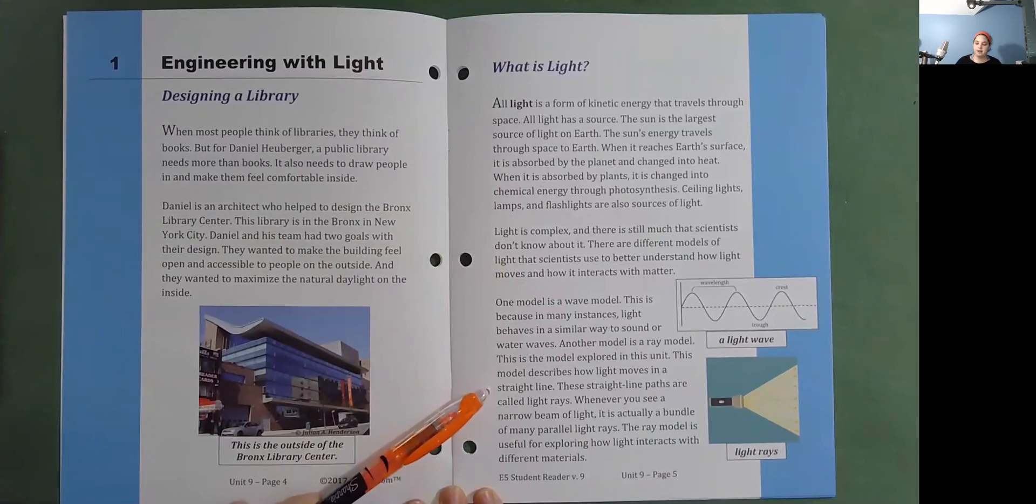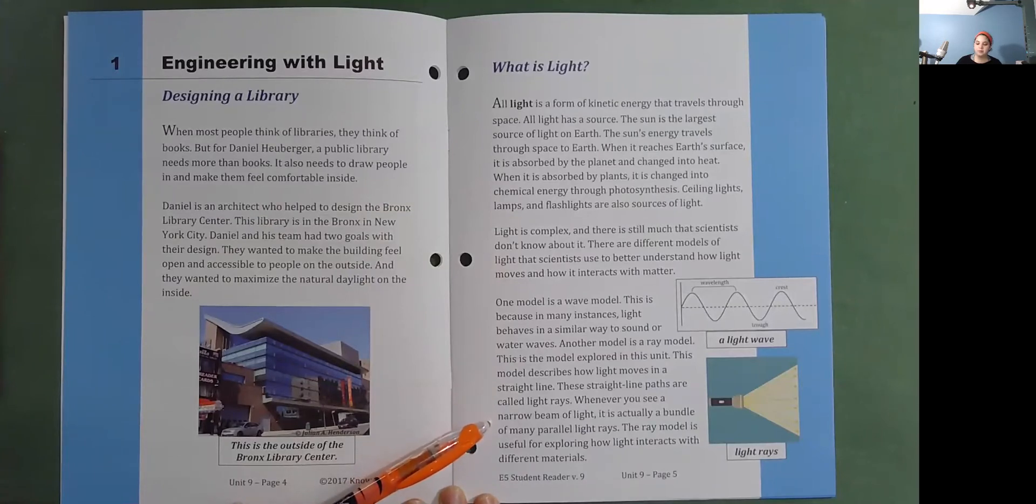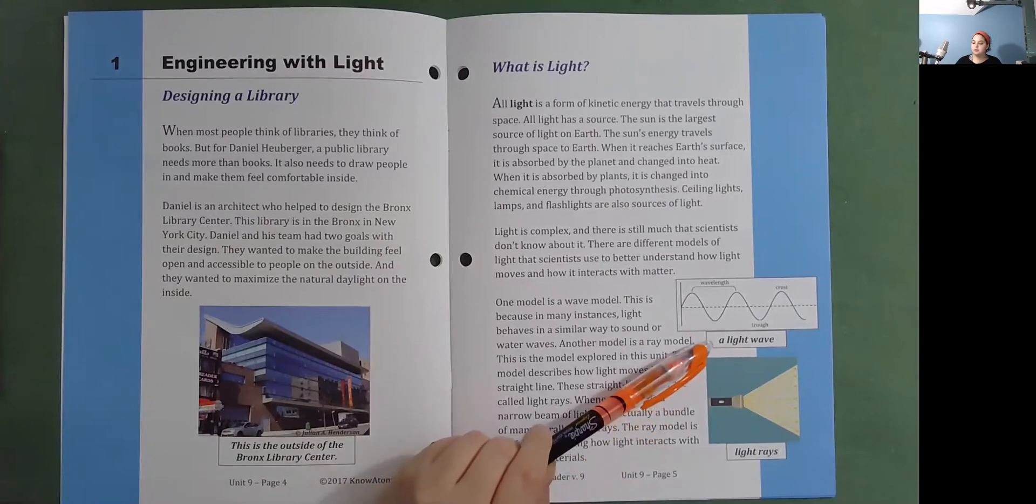These straight line paths are called light rays. Whenever you see a narrow beam of light, it is actually a bundle of many parallel light rays. The ray model is useful for exploring how light interacts with different materials. So here's a light wave and here's light rays.